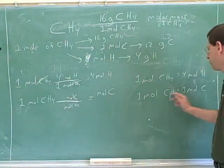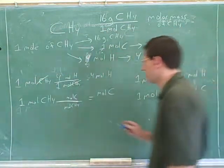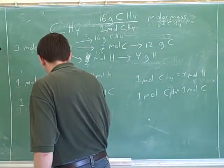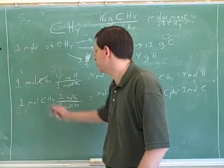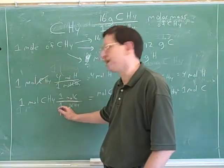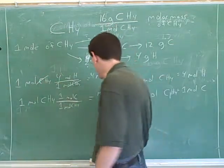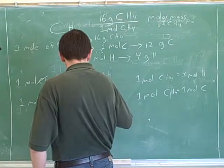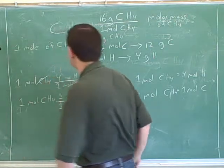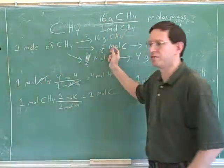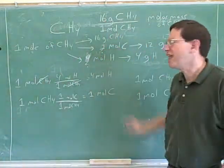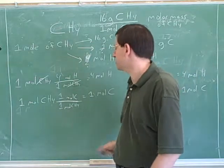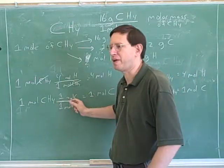We can use the equivalency one mole of methane to one mole of carbon. So then we get a very boring and unexciting calculation of one times one divided by one, which equals one. So we can see that one mole of methane has one mole of carbon.